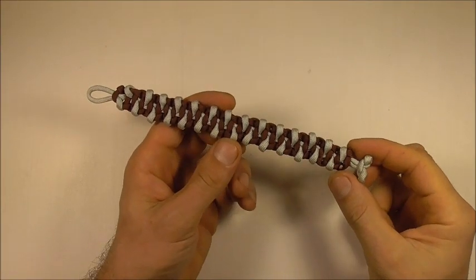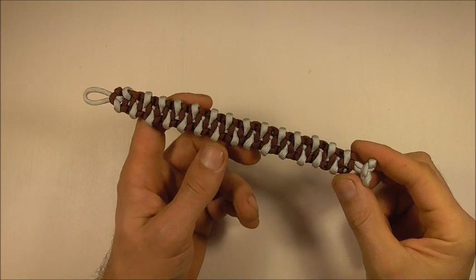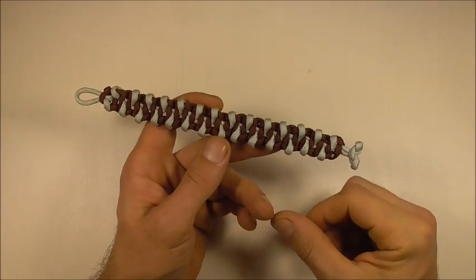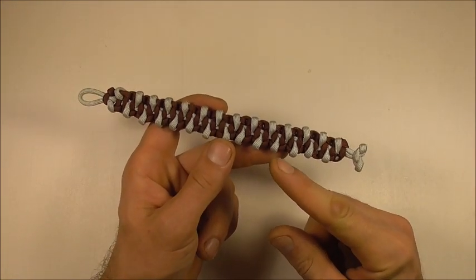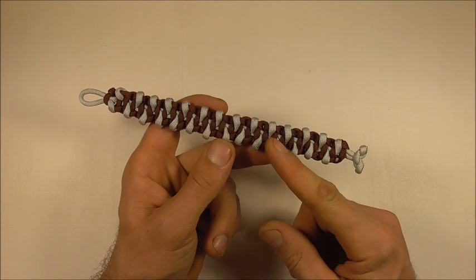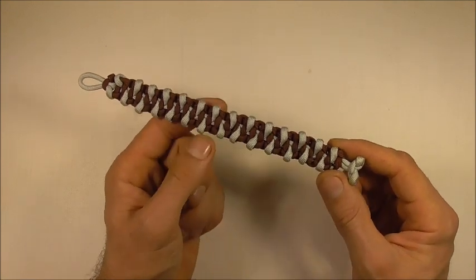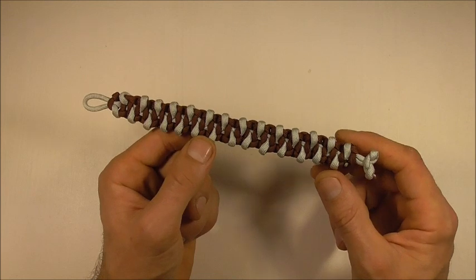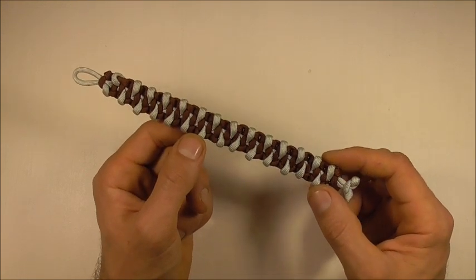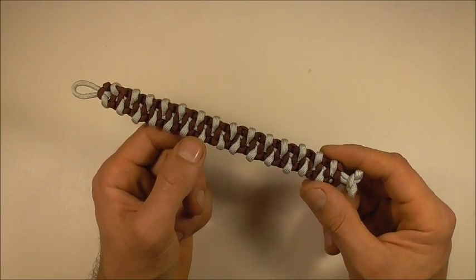So there you are. That is your finished caged Solomon bar. If you like this kind of thing feel free to hit the subscribe button because here we talk about both decorative and functional knots. Thanks for watching. I like you all and I will see you on the next video.